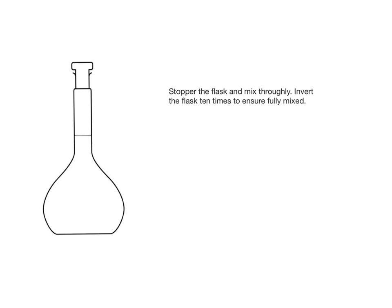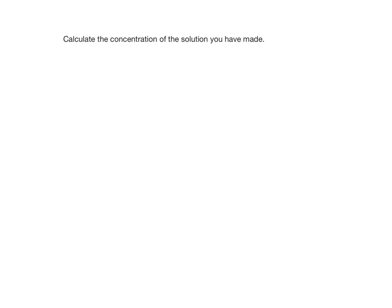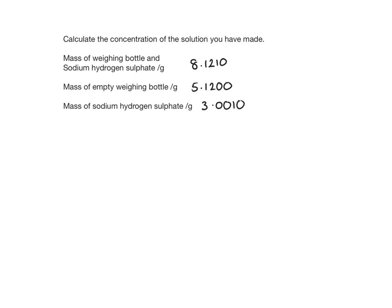Finally, calculate the concentration of the solution you have made. Using your recorded results, work out the mass of sodium hydrogen sulfate used by subtracting the mass of the empty weighing bottle from the mass of the weighing bottle and sodium hydrogen sulfate combined. Then work out the moles of sodium hydrogen sulfate.